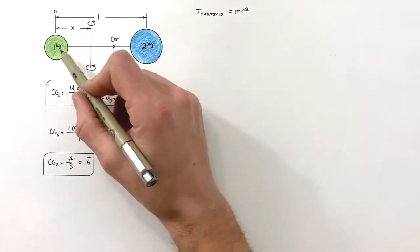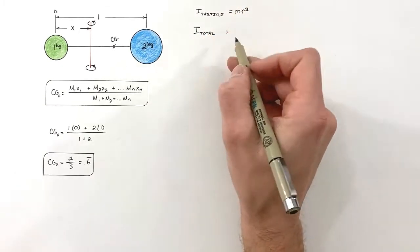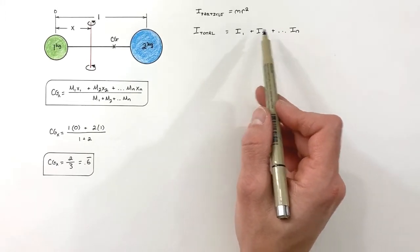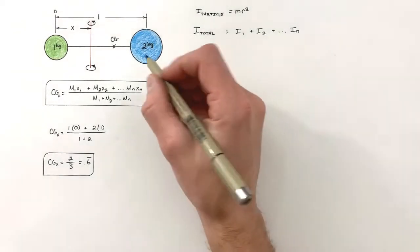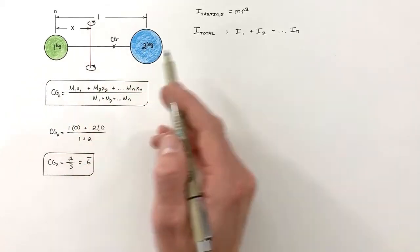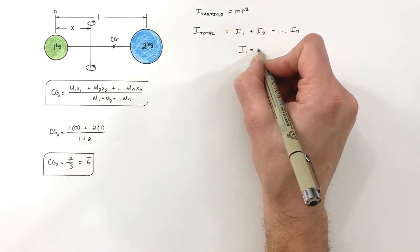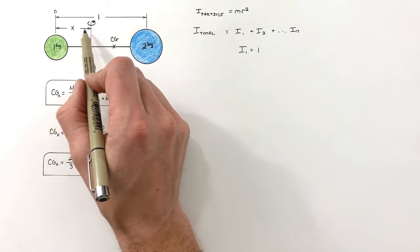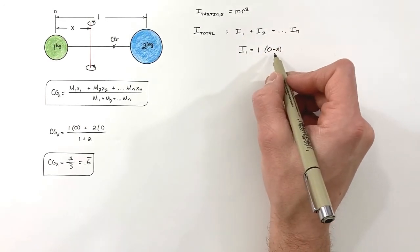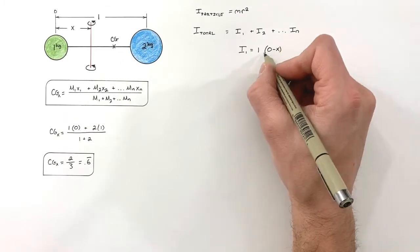In coming up with the rotational moment of inertia of an assembly, the total inertia is equal to the sum of the individual inertias. In this problem we only have to deal with two individual particles, which makes this a little easier. For our one kilogram particle, it has a mass of one and a radius. I'm going to call this radius zero minus x — I'll explain why in a second — so that's the radius squared.